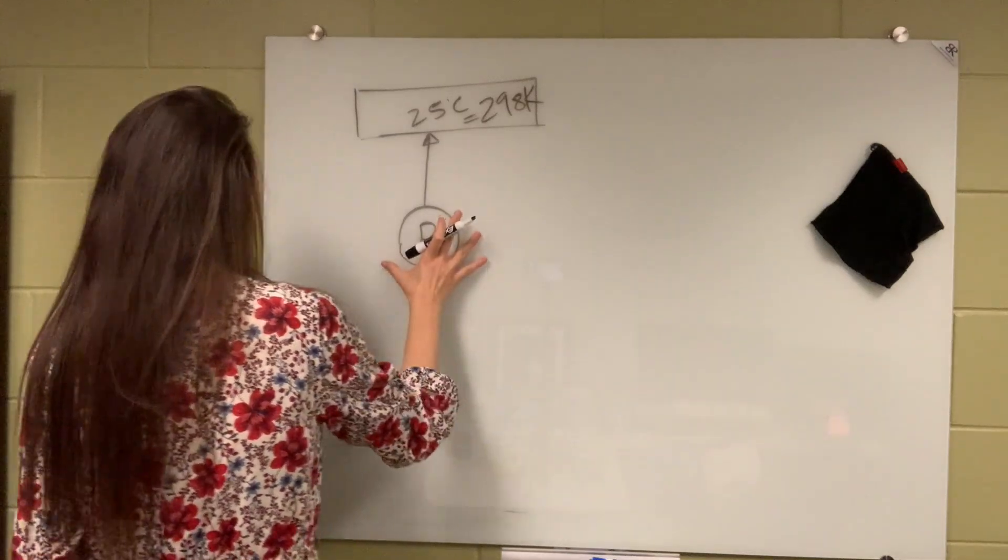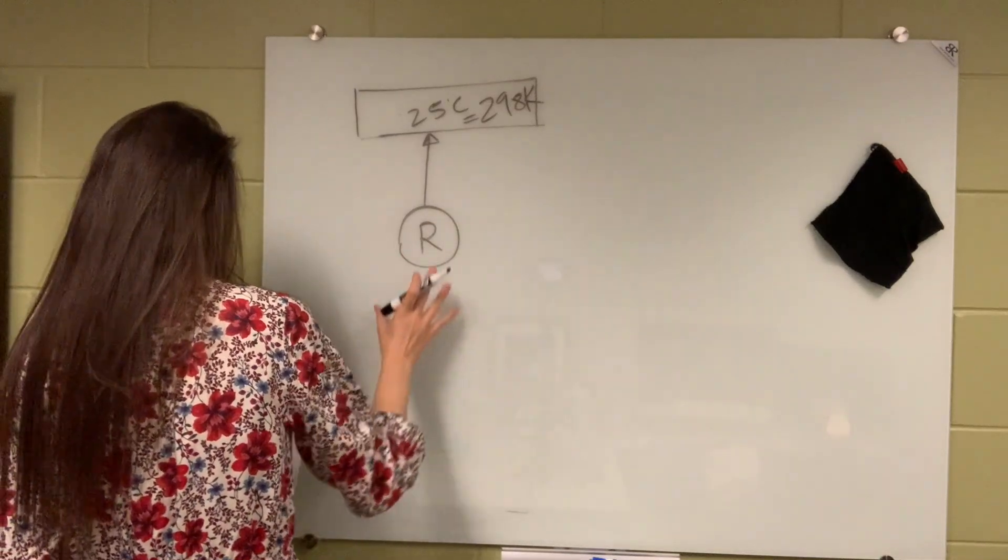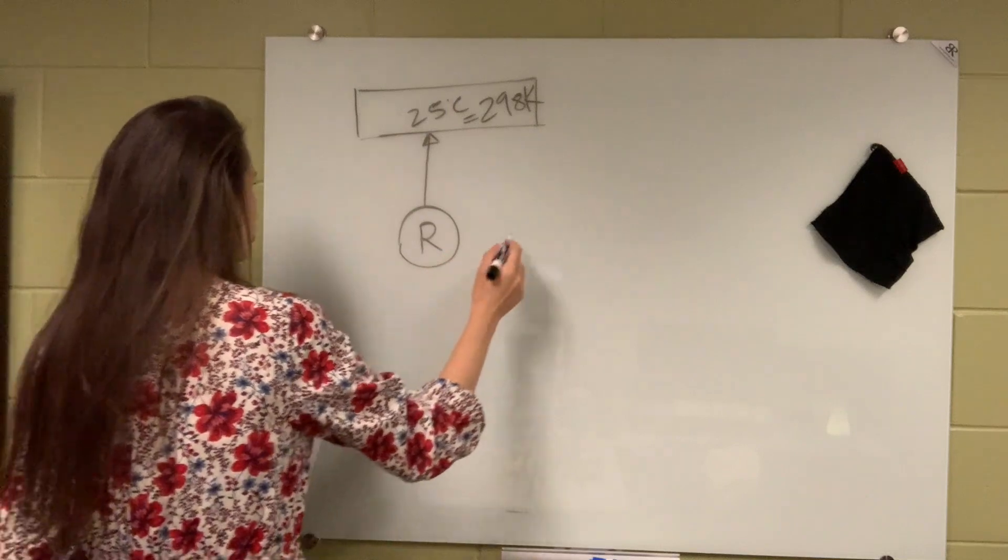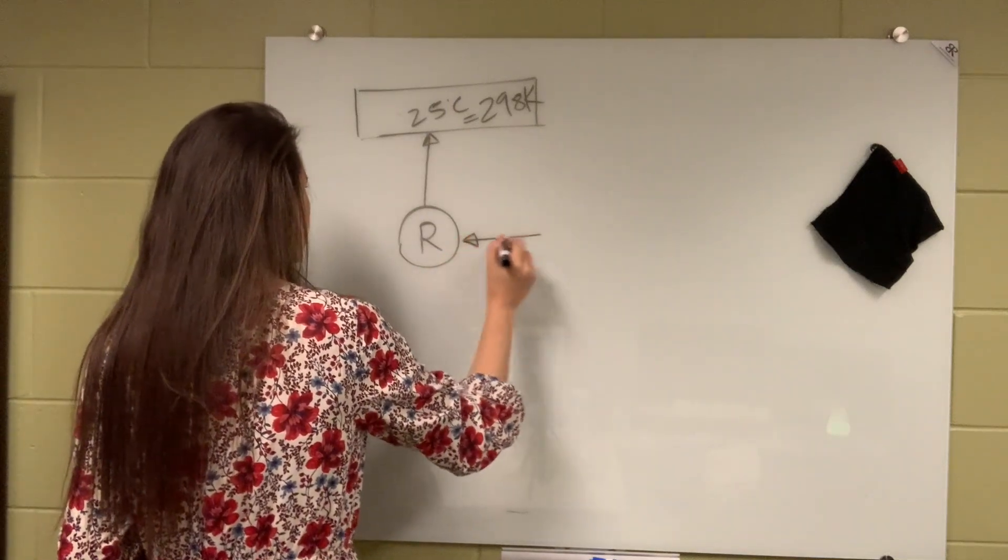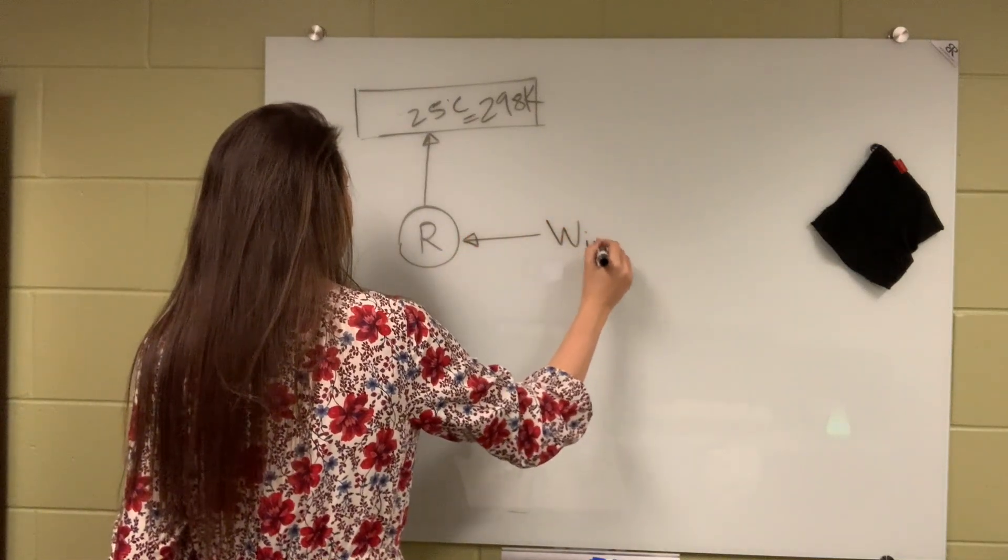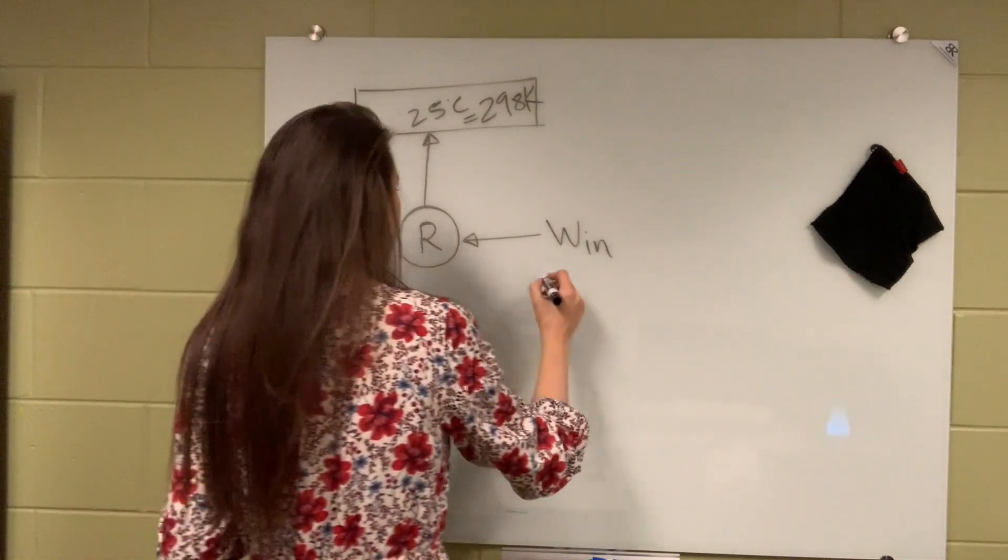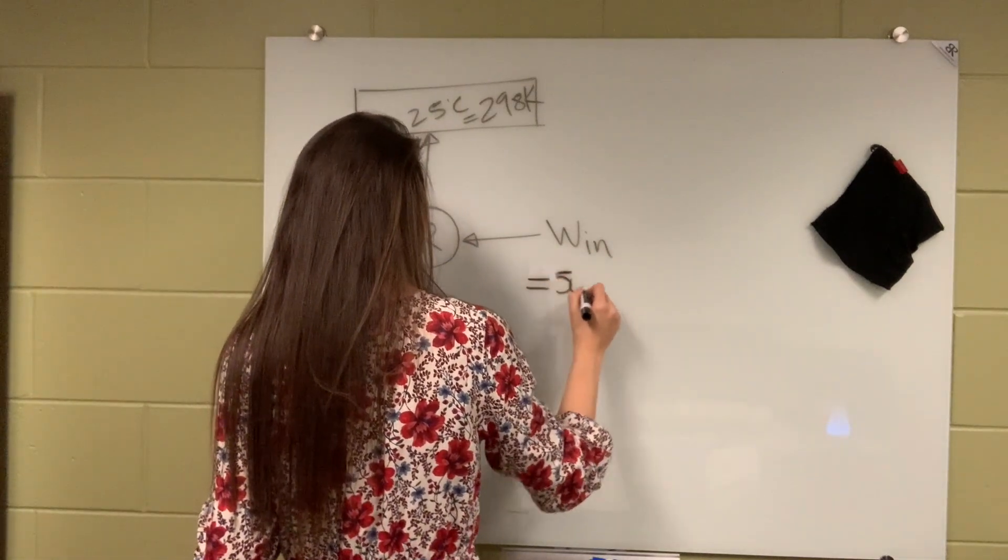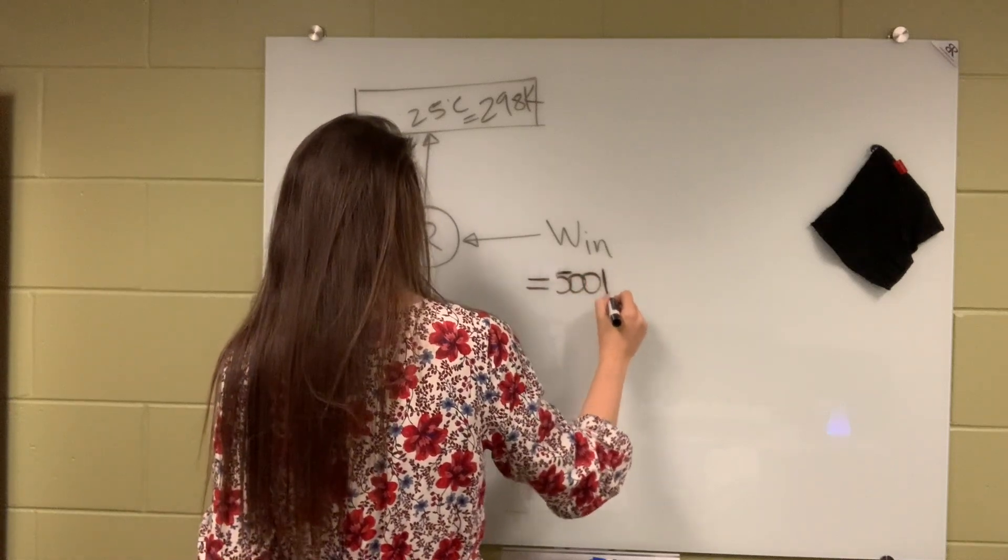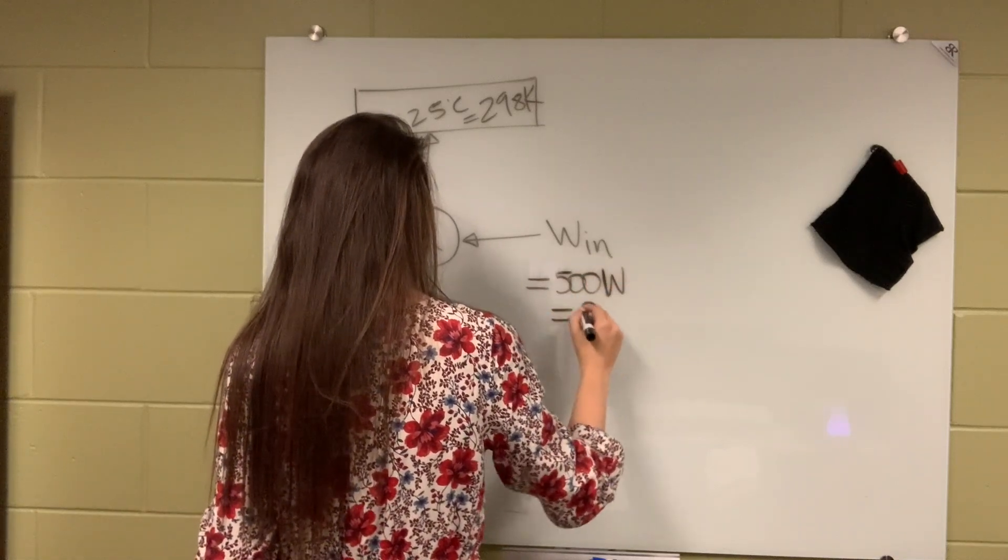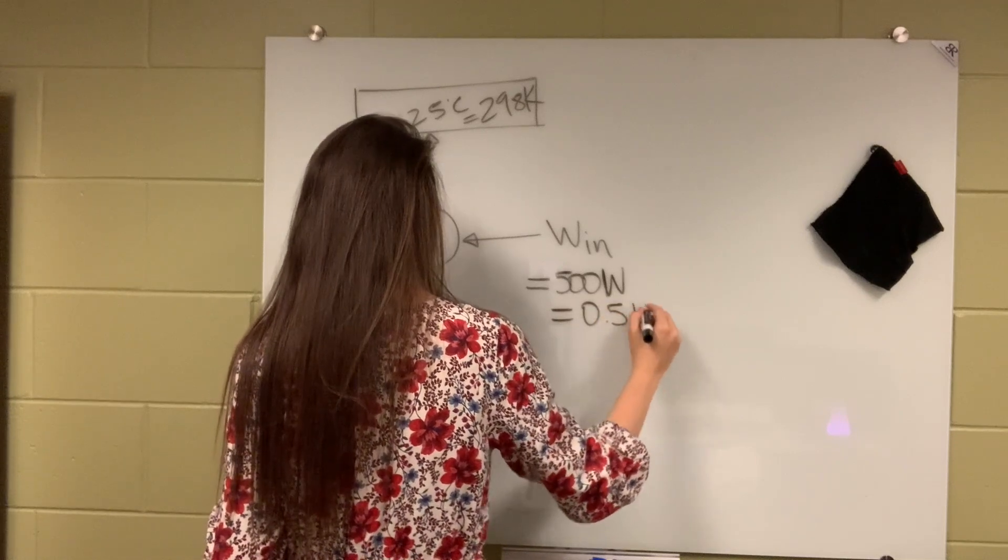So for a refrigerator to work it needs an input, work input, so there has to be a work input. And this is given to us. We are given that this is 500 watts, meaning 0.5 kilowatts.